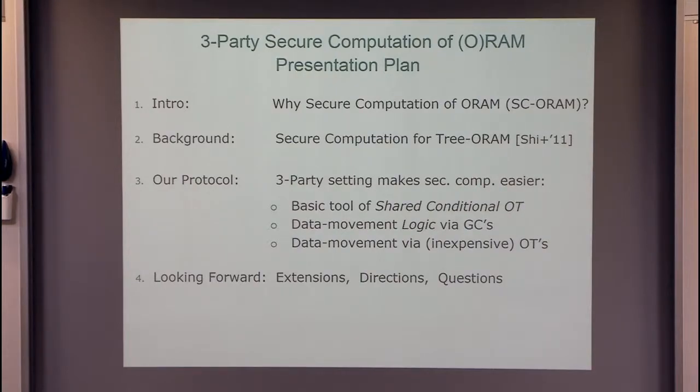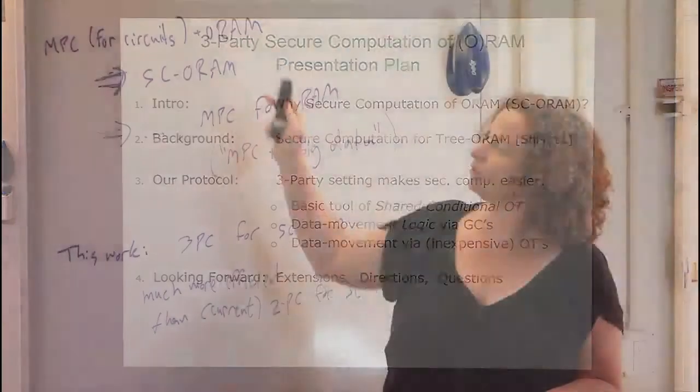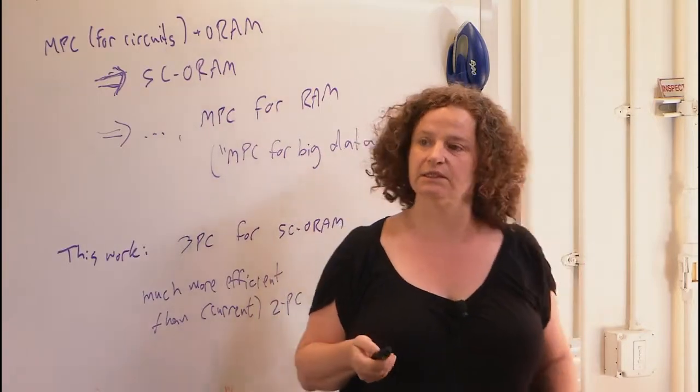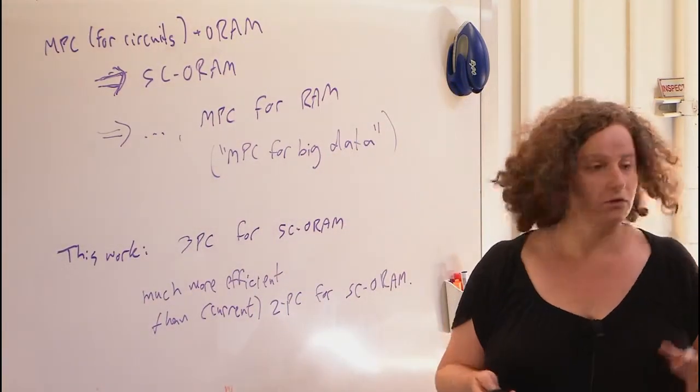Everything is honest but curious. In two-party computation, one can be corrupted. In three-party computation, also only one can be corrupted. So this honest majority makes life better, and then they have a lot of specific optimization.